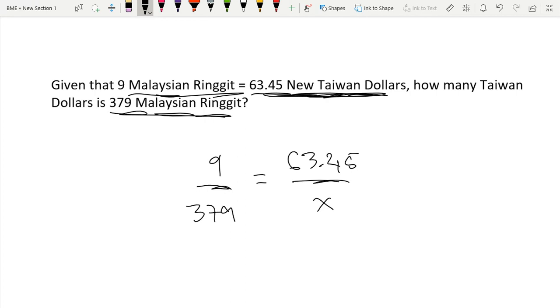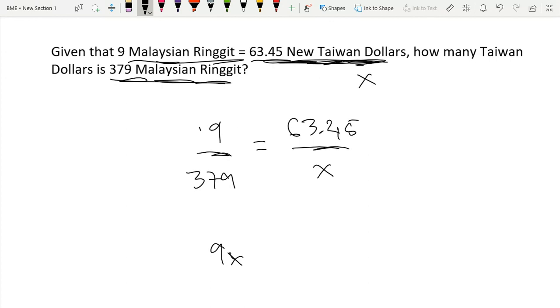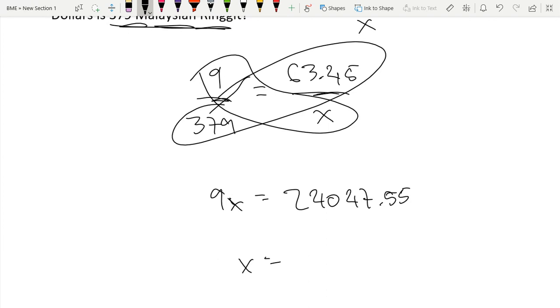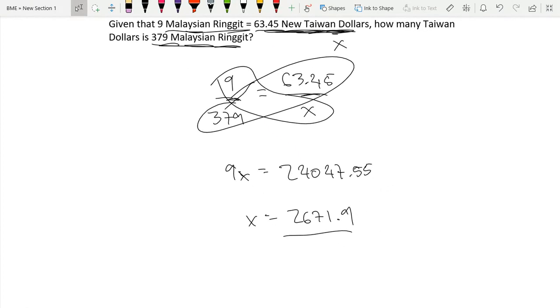So 9x—we're just doing the cross multiplying by creating common denominators—equals 63.45 times 379. 63.45 times 379 is equal to 24,047.55. Now we can divide both sides by 9 to get x equals 2,671.9. So we get 379 Malaysian Ringgit is 2,671.9 New Taiwan Dollars.